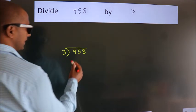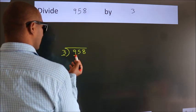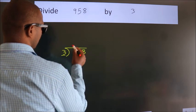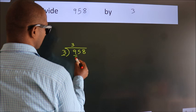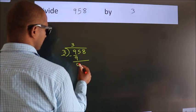Next, here we have 9, here 3. When do we get 9? In the 3 table, 3 threes are 9. Now we should subtract. We get 0.